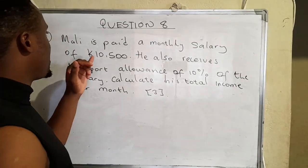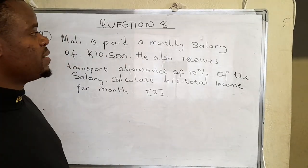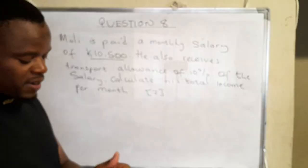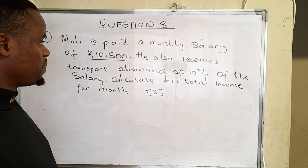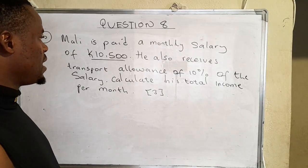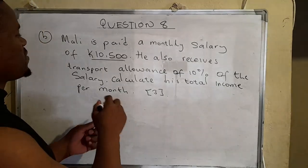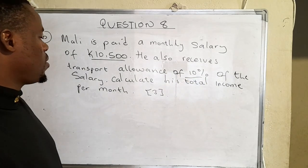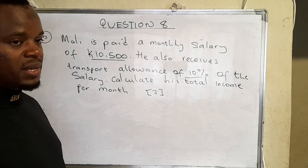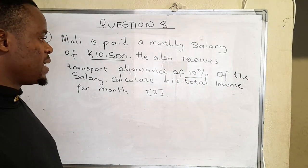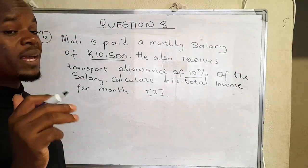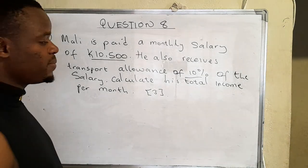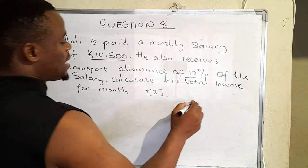The problem reads: Mali is paid a monthly salary of ten thousand five hundred. He also receives a transport allowance of ten percent of his salary. We need to calculate his total income per month. So there are two things here — there is the salary and the transport allowance.